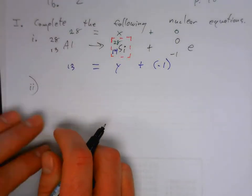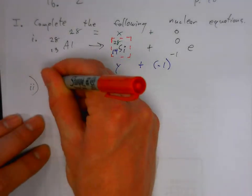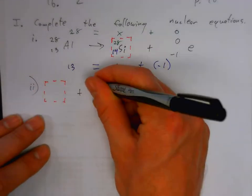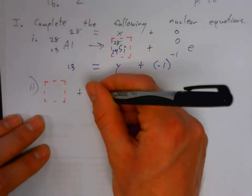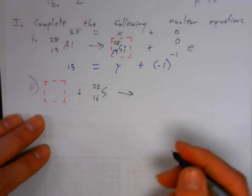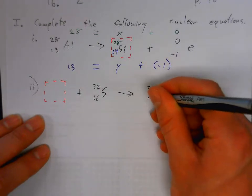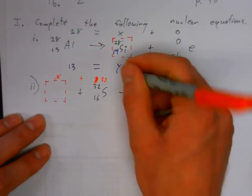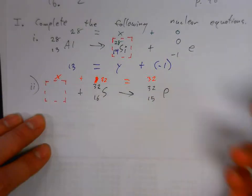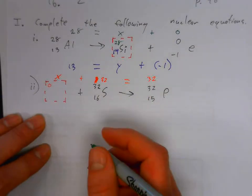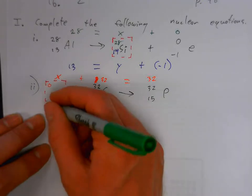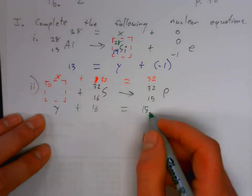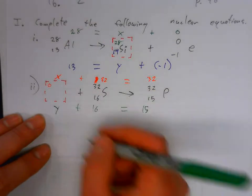Let's try this one: an unknown particle bombards sulfur-32, which produces phosphorous-32. Setting up our equations: 32 equals x plus 32, so x equals zero. And y plus 15 equals 16, so y equals negative one.